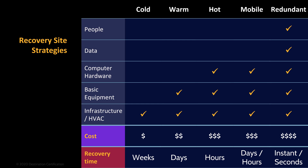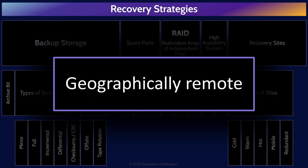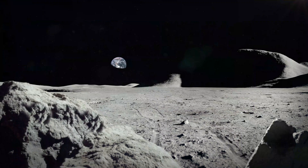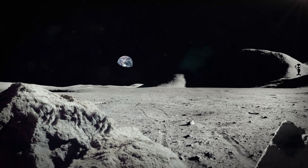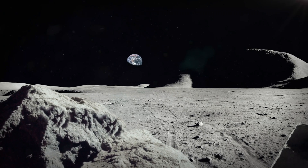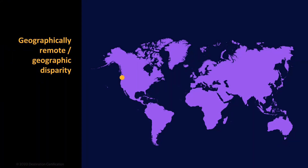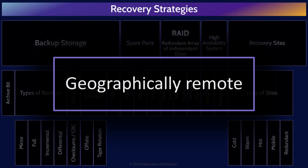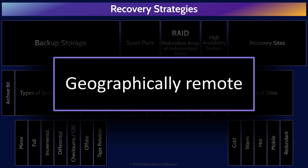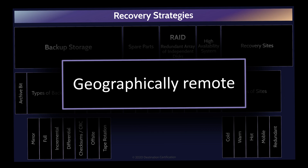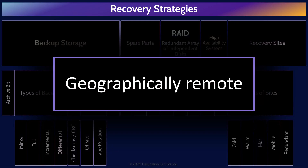The RTO — the recovery time objective — is what is going to drive an owner to select between these different recovery solutions. Any of these redundant sites should be built in a geographically remote location from the primary site. Geographically remote does not imply any exact distance, but rather far enough away from the primary site such that whatever disaster has befallen it — earthquake, hurricane, floods, wildfires, massive power outage, roaming llamas, whatever — will not affect the recovery site.